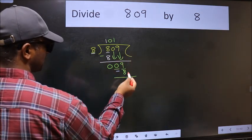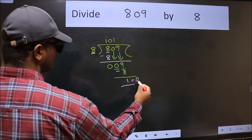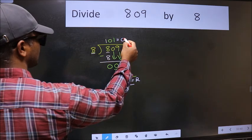No more numbers to bring it down. So we stop here. This is our remainder and this is our quotient.